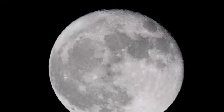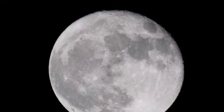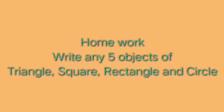So here we have learned about the shapes: triangle, square, rectangle, and circle. Your homework is to write five objects for each of these shapes. You can write any five examples. Hope you all understood what the shapes are and how many sides they have. Study properly and do the homework. See you in the next class — take care, enjoy the homework, thank you, bye bye!